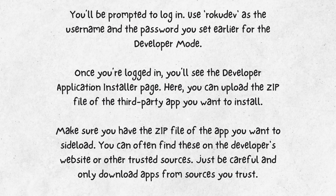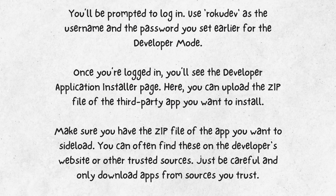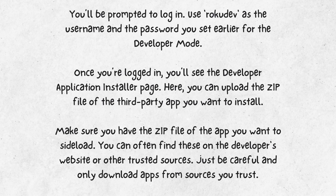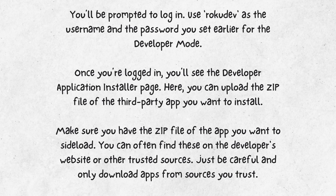You'll be prompted to log in. Use RokuDev as the username and the password you set earlier for the developer mode. Once you're logged in, you'll see the developer application installer page. Here, you can upload the zip file of the third-party app you want to install.